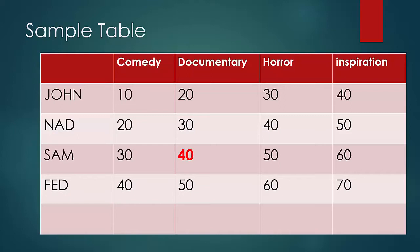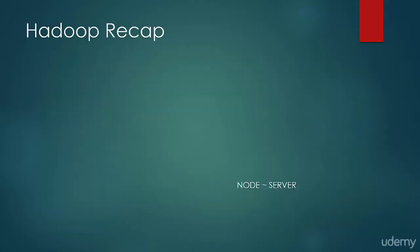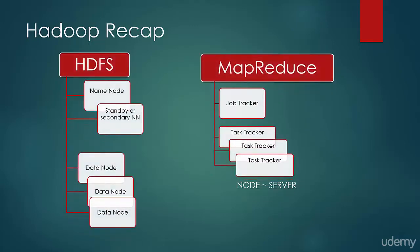Let us proceed to discuss Hive architecture. In this tutorial, let us do a quick recap of Hadoop architecture. Hadoop comprises of HDFS and MapReduce. HDFS has three components: Name Node, Standby Name Node, and Data Node.